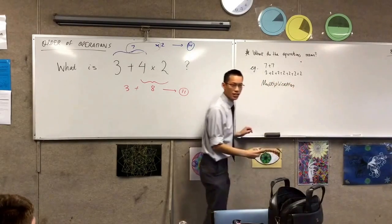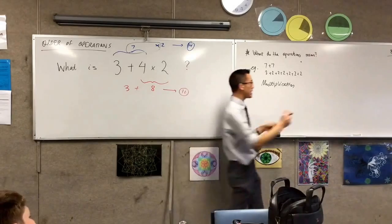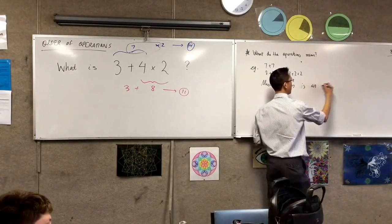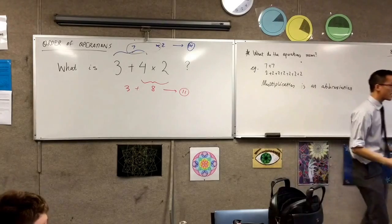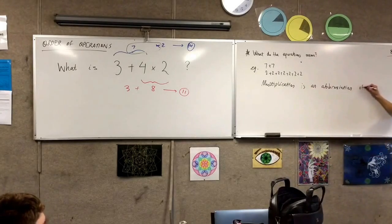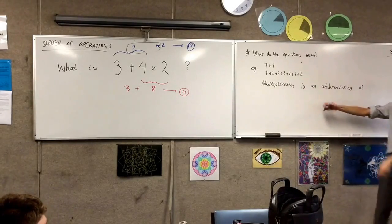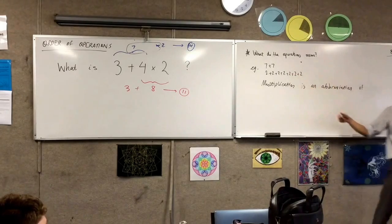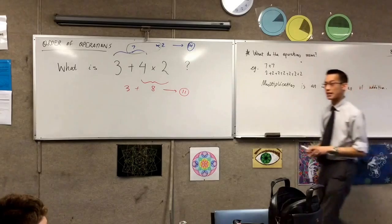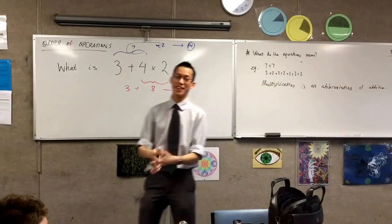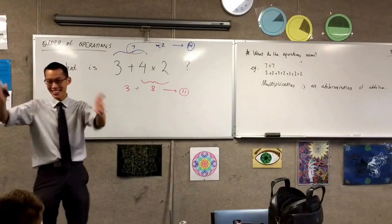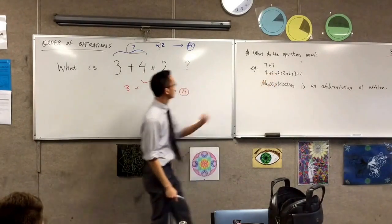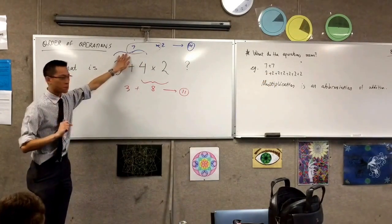Multiplication is an abbreviation of addition. If I want to do addition a whole bunch of times but I don't have to write it out a whole bunch of times, I'll just use the times sign — multiplication. It's a shortcut, because as I keep saying to you, mathematicians are famously lazy. We want to write as little as possible.